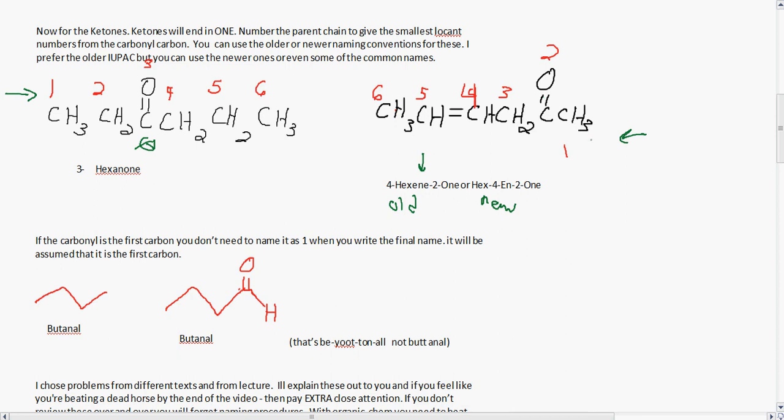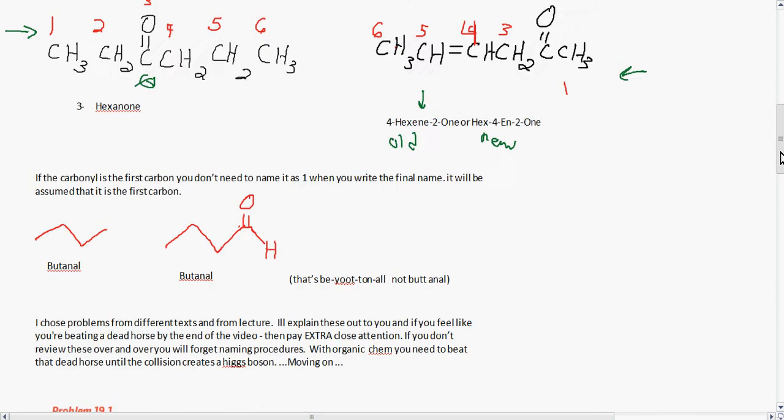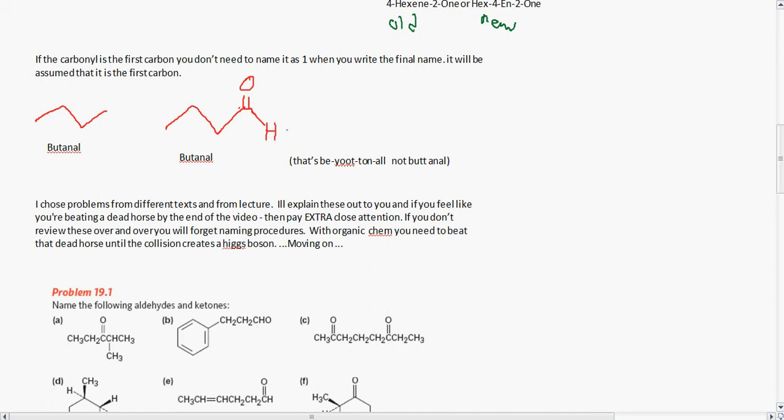If the first carbonyl is on the first carbon, you don't need to name it as a 1 when you write the first name. It will be assumed that it's the first carbon. So here you have butanal. And then on the right you have butanal, not but anal. Depending on the book, just be sure you name it correctly.